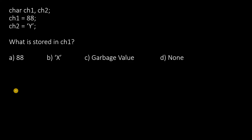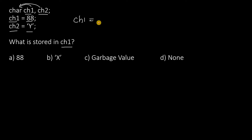Next, ch1 and ch2 are both character variables. ch1 is equal to 88, ch2 is equal to capital Y. What is stored in ch1? We are giving 88 to ch1. 88 is the ASCII value of capital X. So, ch1 will get the value capital X. The answer is B.